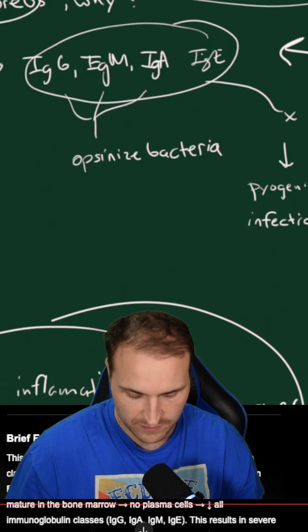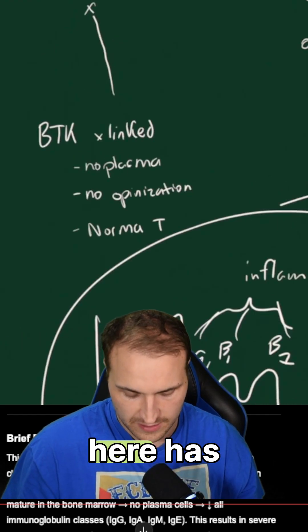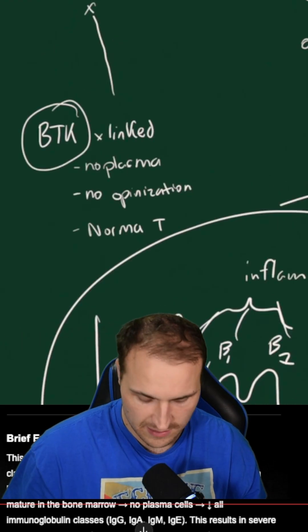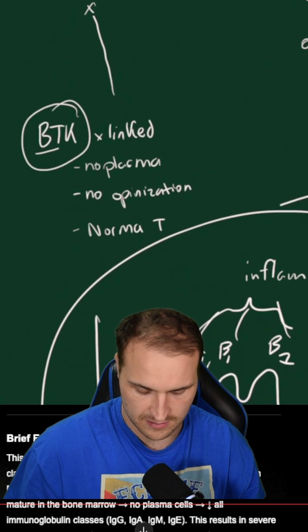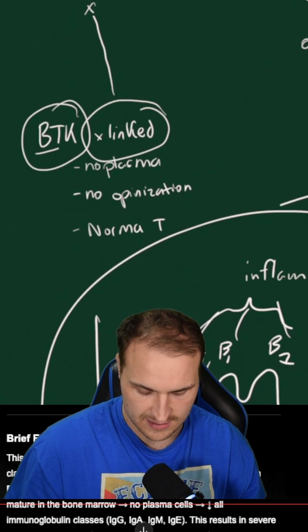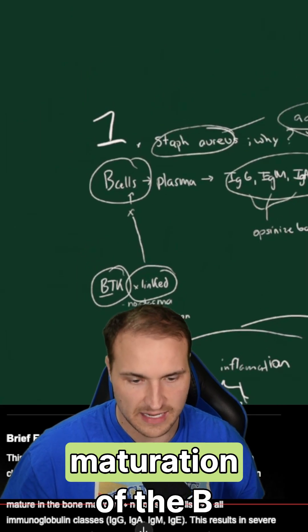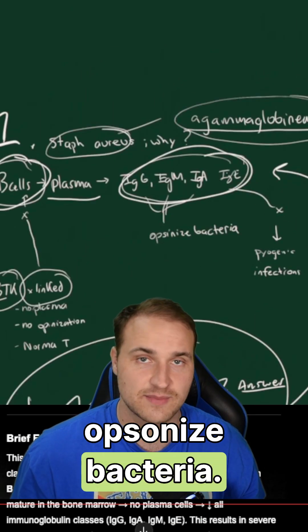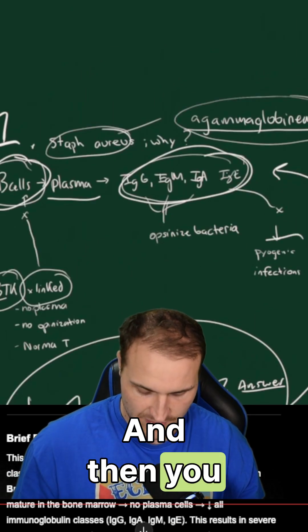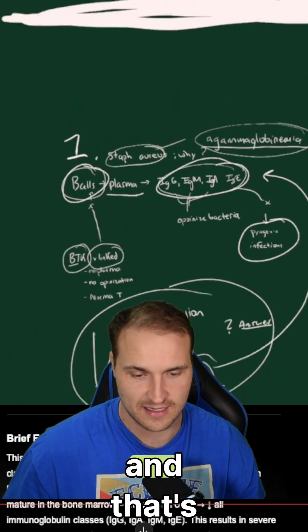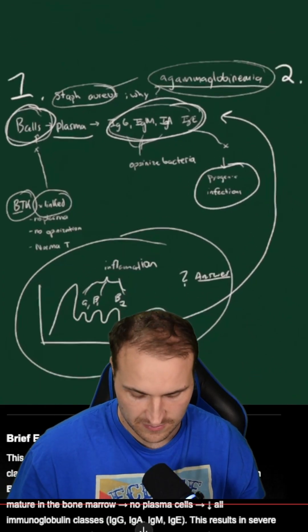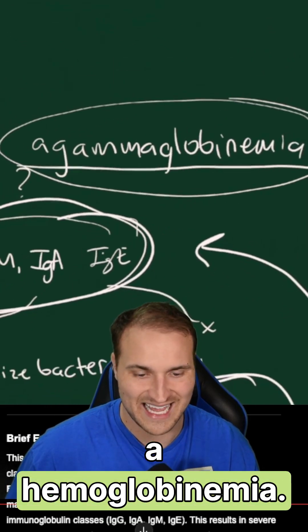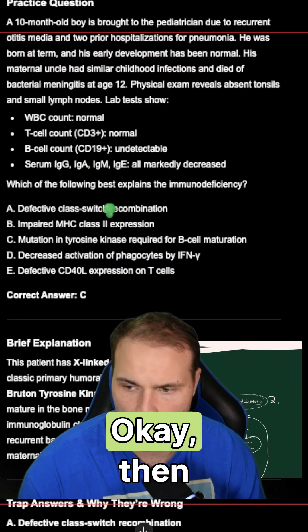Why are they deficient? It's because our patient has a defect in the BTK gene. This is an X-linked disease. It stops the maturation of B cells, so they can't opsonize bacteria, and then you get infections — that's what Staphylococcus has to do with agammaglobulinemia.